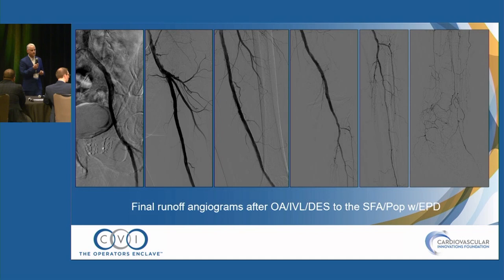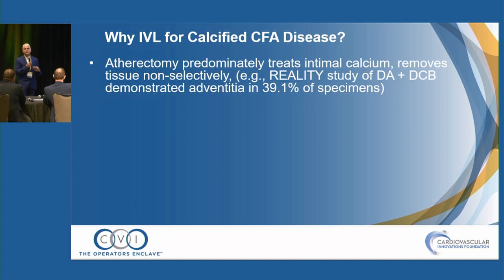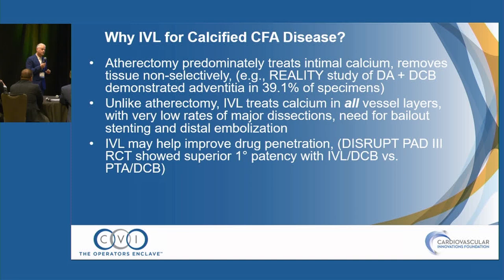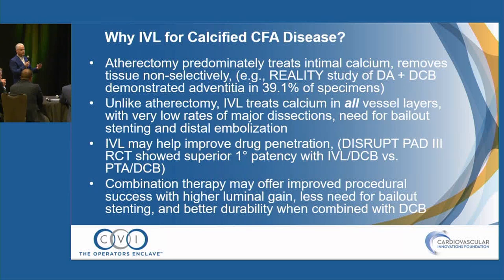Many of us have become big fans of intravascular lithotripsy (IVL) for common femoral disease. The rationale is that atherectomy predominantly treats intimal disease, while IVL treats the entire wall. Unlike atherectomy, IVL treats all vessel layers with very low rates of dissection and need for bailout stenting, and may potentially help to improve drug penetration. In the Disrupt PAD randomized trial, there was greater patency in the group treated with IVL prior to DCB. Combination therapy can be really effective to get a good acute procedural result with less need for stenting and better durability.